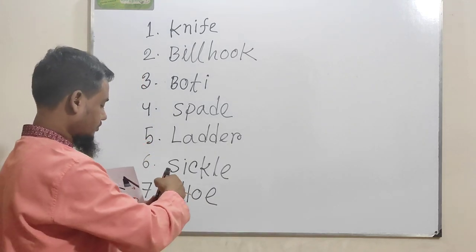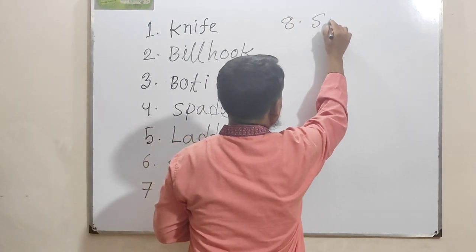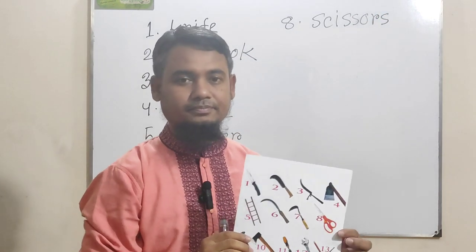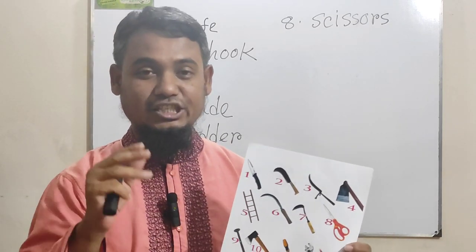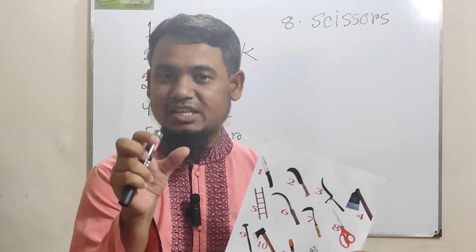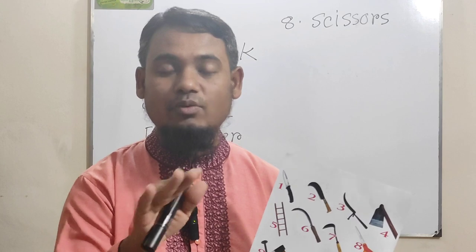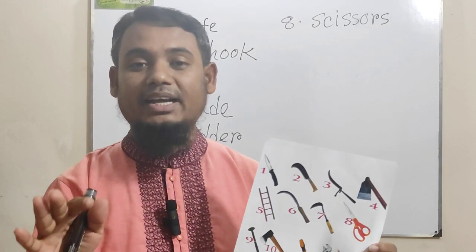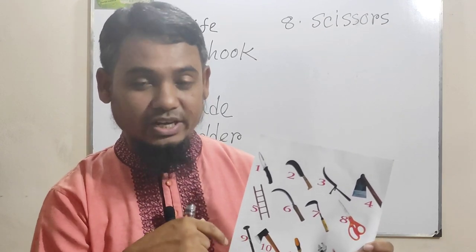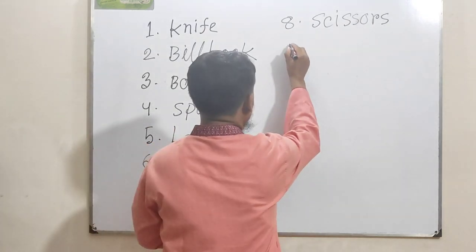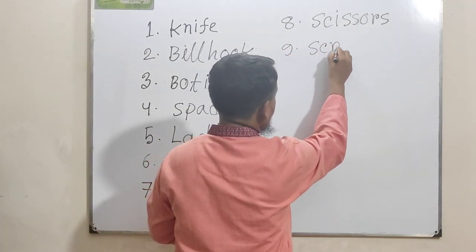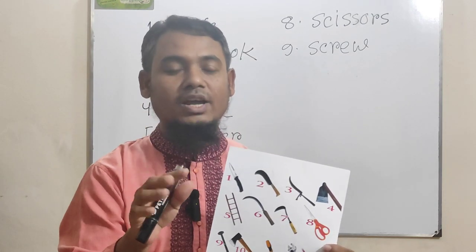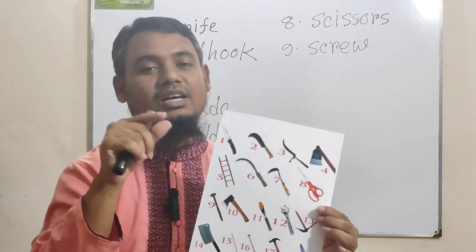Picture number nine is screw. Screw is used to join two pieces of wood and in some cases it is used to fasten tin with wood. Picture number nine is screw, which is also used by the carpenter while making different houses in rural areas.